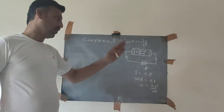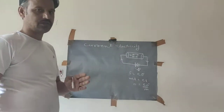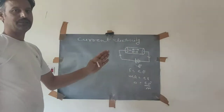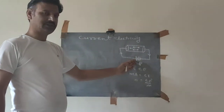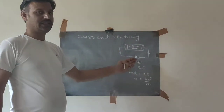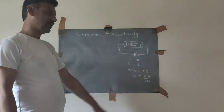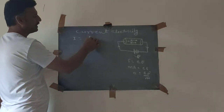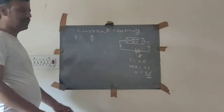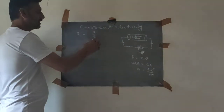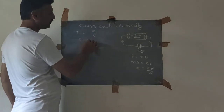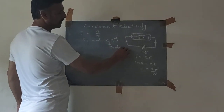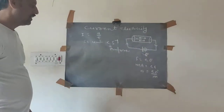The cause of current in a conductor is the flow of electrons in a particular direction. Electrons drift towards the positive terminal of the battery, and the conventional direction of current is taken from positive to negative. Current is a scalar quantity denoted by I, and it is the rate of flow of charge. Its SI unit is coulomb per second, which is called the ampere.